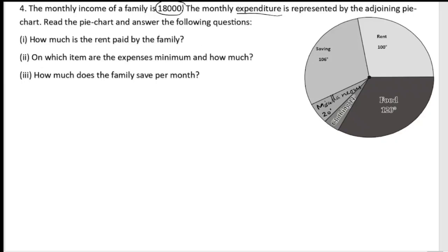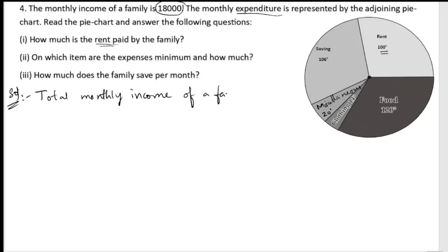The first question is: how much is the rent paid by the family? For rent, we look at the pie chart — rent is 100 degrees. It is in degrees, but we need to know the actual amount paid. So first, let us write down what is given: the total monthly income of the family is ₹18,000.